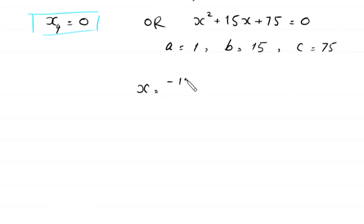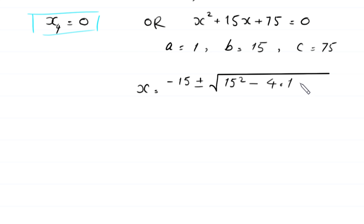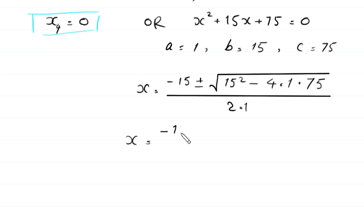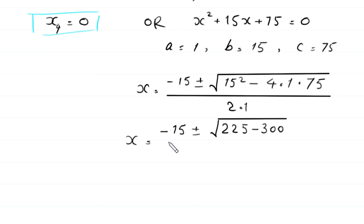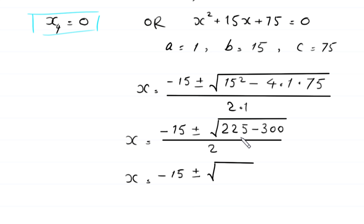According to the quadratic formula, x equals negative 15 plus or minus the square root of 15² minus 4(1)(75), divided by 2(1). This gives the square root of 225 minus 300, which is the square root of negative 75, divided by 2.